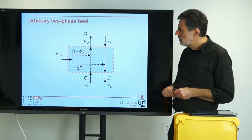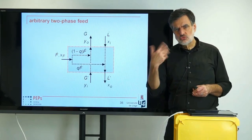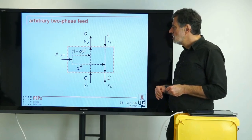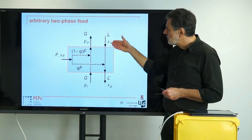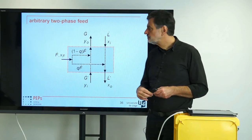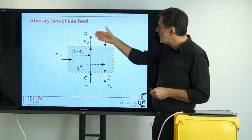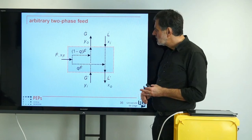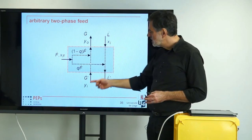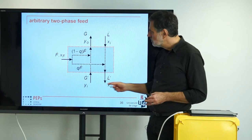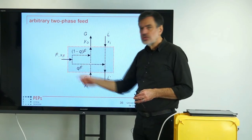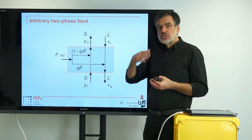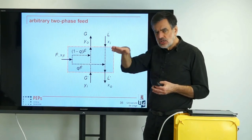We can depict it in this way, and actually we know this — this should remind us of something that we have already regarded in the section on distillation. We had our rectifying part, we had our stripping part. There we had our L-dot and G-dot, L-dot prime, G-dot prime. In our current nomenclature, this is the X-i, this is the Y-i, this is the Y or the X-O. And we have the feed with the corresponding feed composition. And now we regard that feed position, exactly where we feed it.